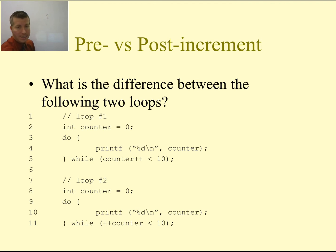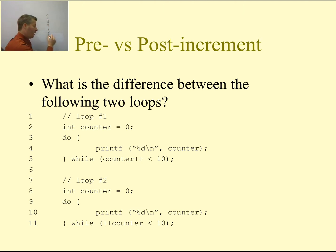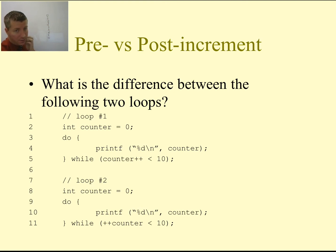Continuing the first loop: we print values up through 10. When counter is 9, we check while 9 is less than 10 — it is — we increment to 10 and print 10. Then we check while 10 is less than 10 — it is not — but we still increment counter due to the post-increment, so by line 6 the value of counter will be 11. So the end value after the first loop is 11.